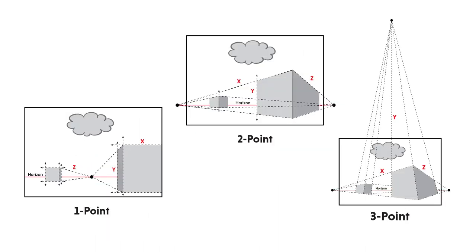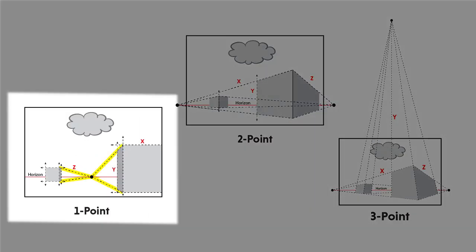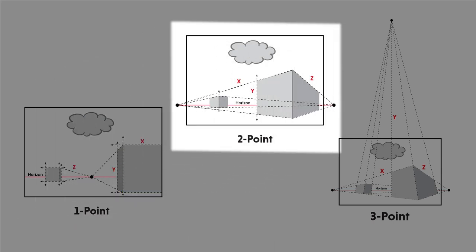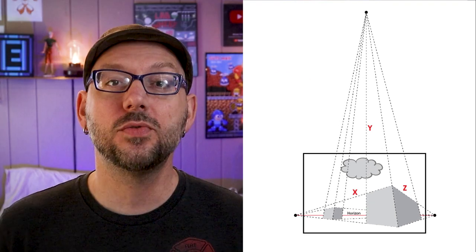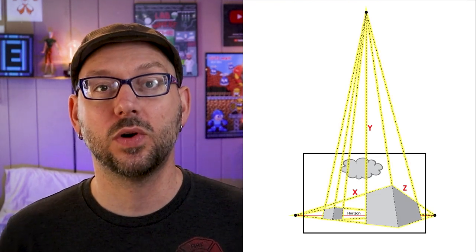Now if you remember in one point perspective we had one axis that receded to one vanishing point. In two point perspective we had two axes receding to two vanishing points. Now if you can guess this time all three of our axes will be converging toward a different point.